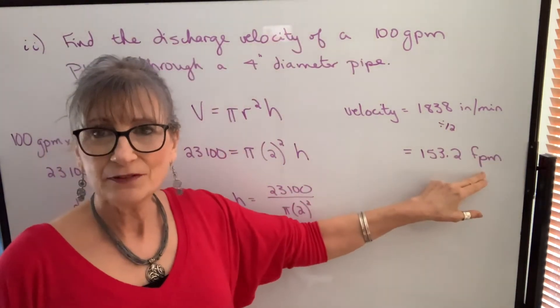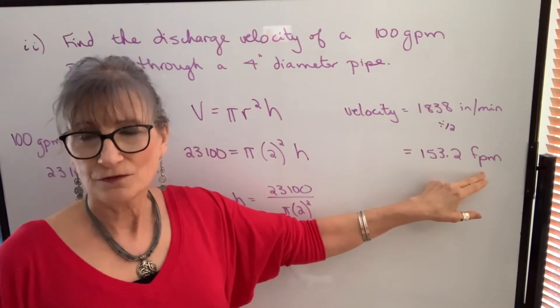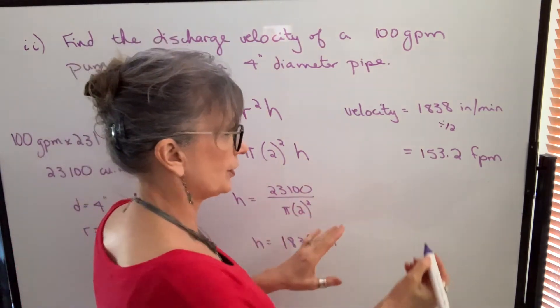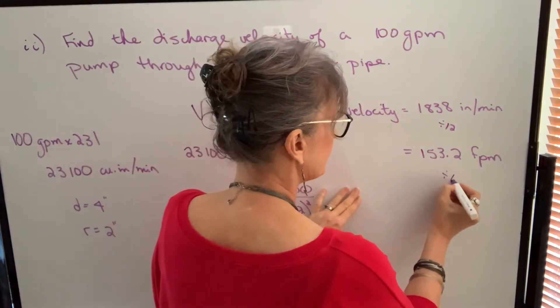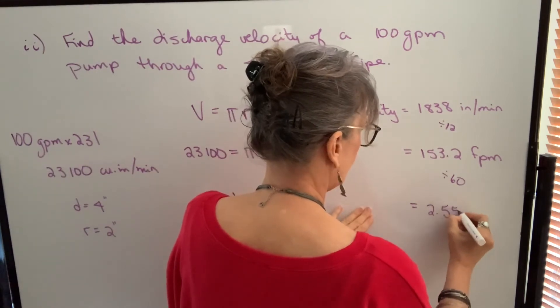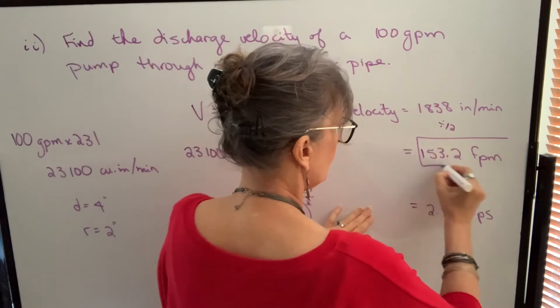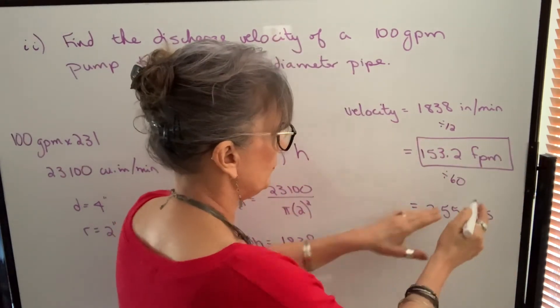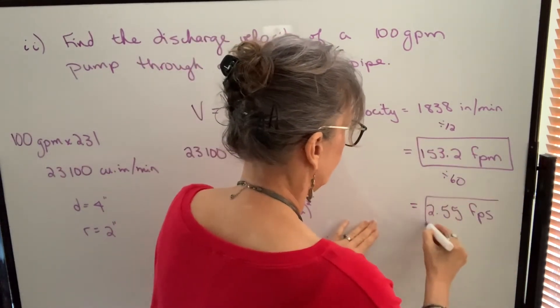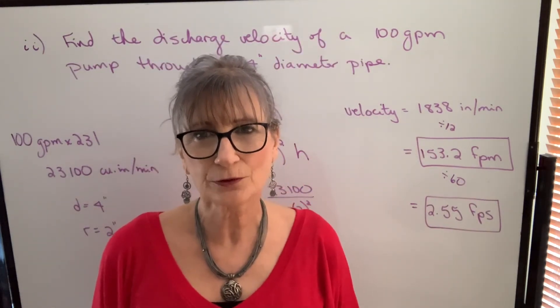You can probably leave it in that form. But if you were required to change it to feet per second, then you're going to do another calculation or another conversion. You're going to divide by 60. And we get 2.55 feet per second. So either of these would be acceptable. This is the typical fluid velocity question you're going to encounter.